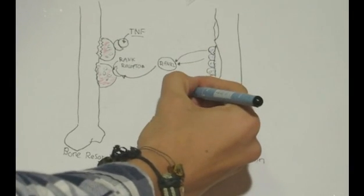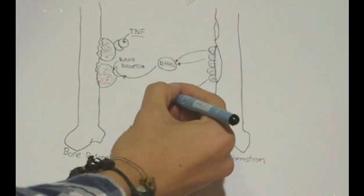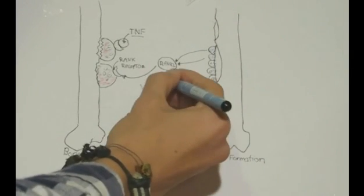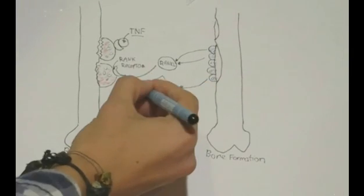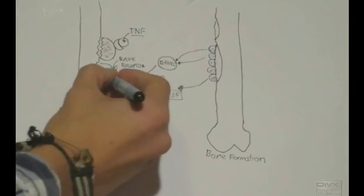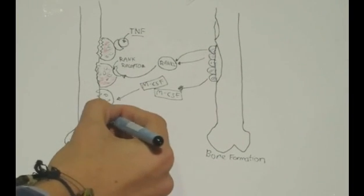Osteoblasts also secrete macrophage colony-stimulating factor, or M-CSF, which promotes the replication and proliferation of osteoclasts.